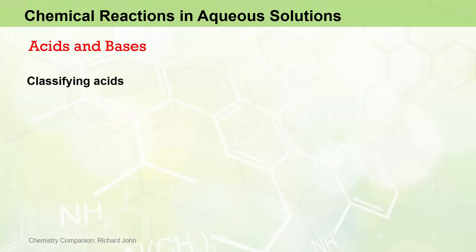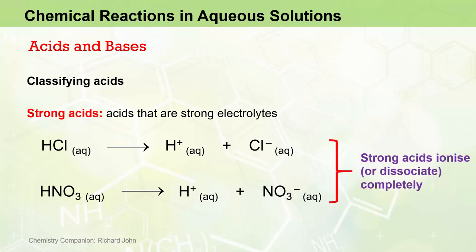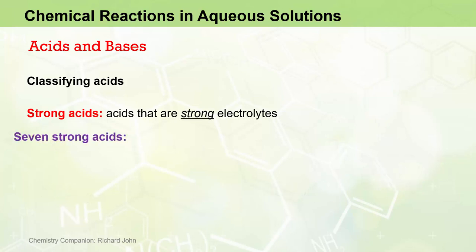We classify acids in a number of ways. One is to classify them as strong acids and weak acids. A strong acid is an acid that is a strong electrolyte, and hydrochloric acid is one example of a strong acid. Nitric acid is another example. Strong acids, like strong electrolytes, ionize or dissociate completely when dissolved in water, so effectively they exist only in their ionic forms when dissolved in water. Of the hundreds of common acids that exist, there are only seven strong acids, and it's worth knowing what they are.